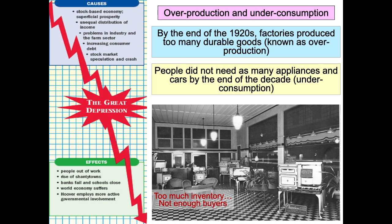The reason for that is very simple. Most of the goods being sold during the 1920s were durable goods — goods that last a long time, goods that you don't need to go buy another item. You don't need more than one refrigerator, you don't need more than one car. People did not need as many appliances, cars, and radios by the end of the decade. So companies were starting to see a reduction in their sales — too much inventory and not enough people to buy those products.